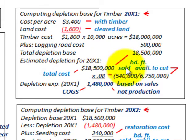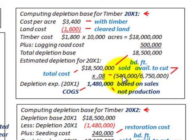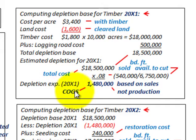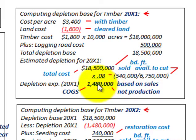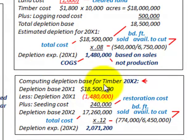To determine the depletion expense for 20x1: we sold 540,000 board feet out of a total available to cut of 6,750,000 board feet, so the fractional amount depleted was 8%. Times our total cost of $18,500,000 gives us $1,480,000. That's our depletion expense for 20x1, and it's part of our cost of goods sold because it's based on the amount sold — not on production.